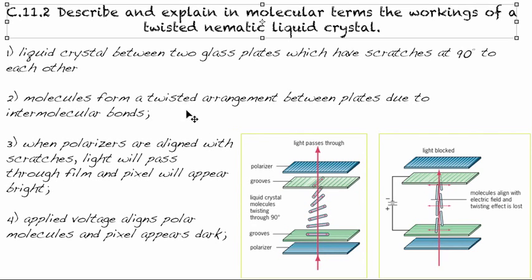The molecules form a twisted arrangement between the plates due to intermolecular bonds. These molecules align within the grooves at that surface, and due to their intermolecular forces, they influence the direction of the one next to them. Because we have this happening on both ends at angles of 90 degrees to each other,